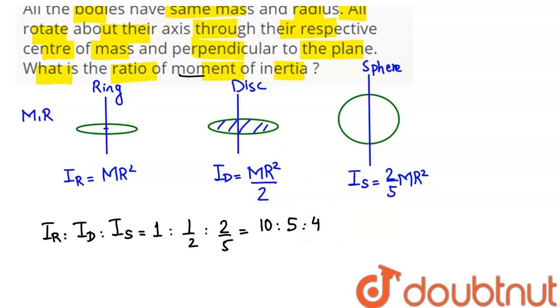So this is our final answer of the ratio of moment of inertia of ring, disc, and sphere about the center of mass and perpendicular to the plane, which is our final answer.